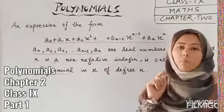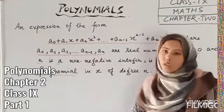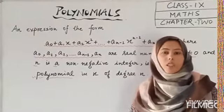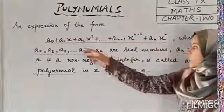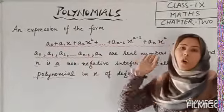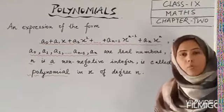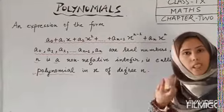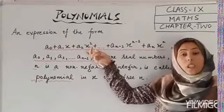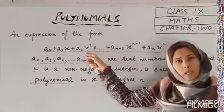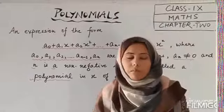Algebraic expressions whose power is non-negative — meaning positive, a natural number — such algebraic expressions are called polynomials. We will study polynomials in one variable. Constants like a0, a1, a2 are numerical values. Variables are symbols which may be assigned a numerical value. Degree means highest power, and coefficient means the number written with a sign alongside the variable.